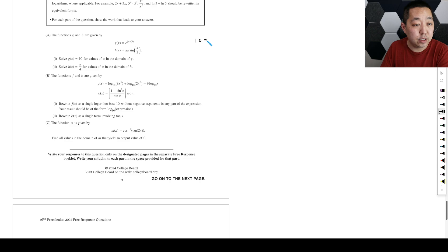10 is equal to e to the x plus 3. And then how do we get rid of the e? You take the natural log of both sides. So you get ln of 10 is equal to x plus 3, and then you can subtract 3. So ln of 10 minus 3 is equal to x. That's how we invert that.